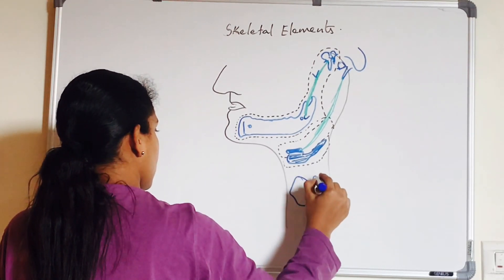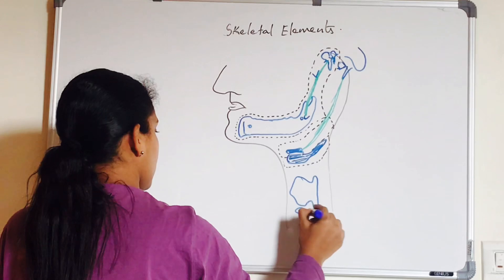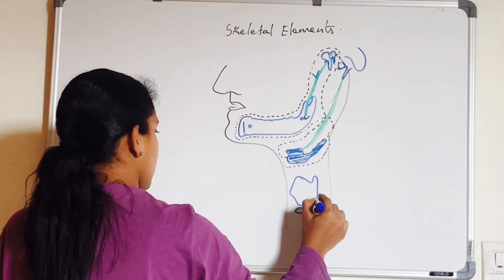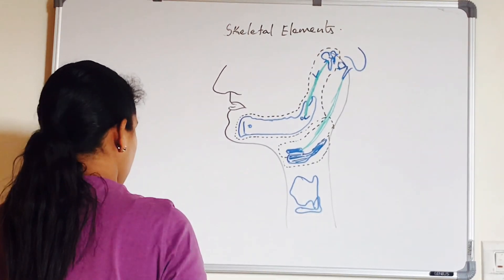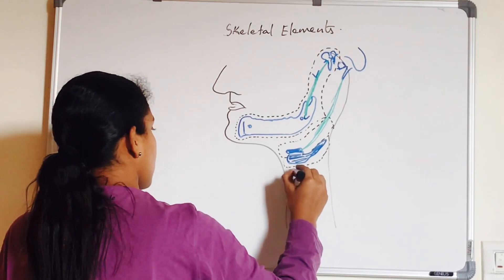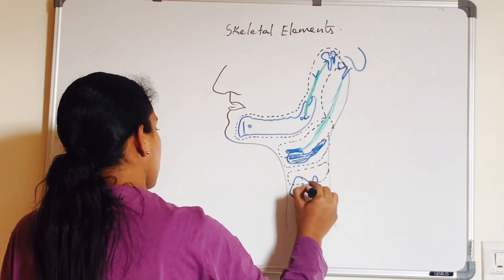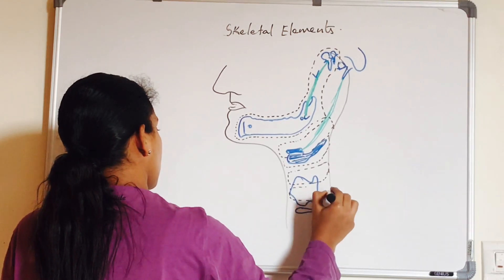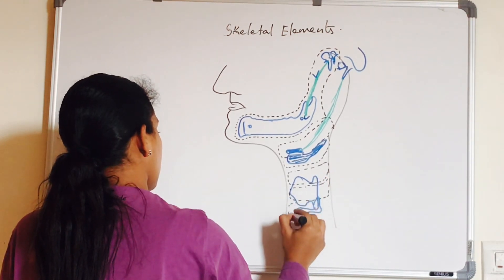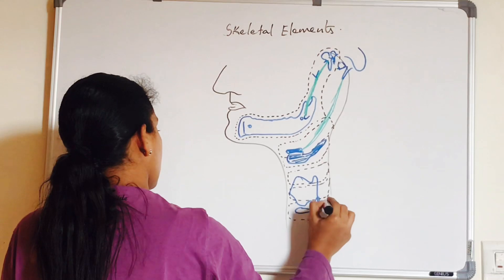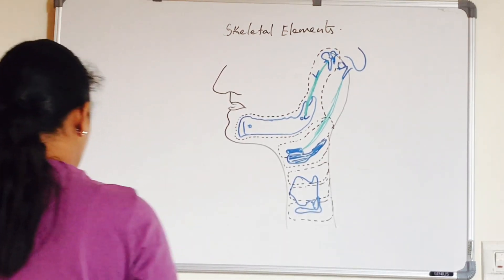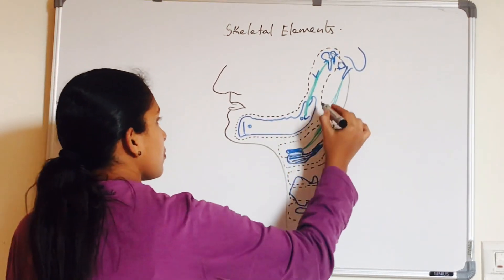Again, the fourth arch and sixth arch: the dorsal part disappears, ventral part forms the lamina of thyroid cartilage from the fourth arch. And cricoid and arytenoid cartilages are formed from the sixth arch. Fifth arch is transitory and presents no practical significance.